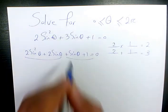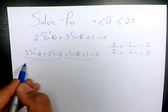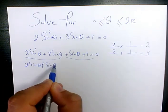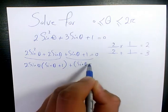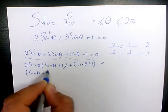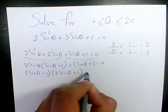Then you factor by grouping. Here we have 2 sine squared theta plus 2 sine theta. I factor out 2 sine theta, which gives sine theta plus 1. And here we have sine theta plus 1. Then you factor out sine theta plus 1, giving us sine theta plus 1 times 2 sine theta plus 1 equals 0.